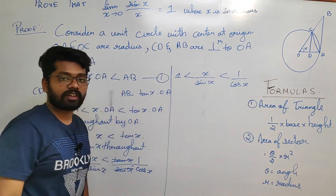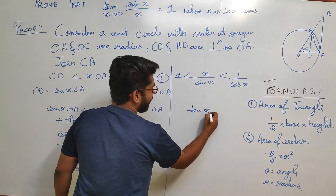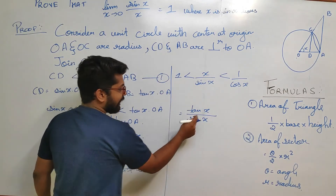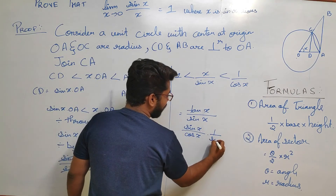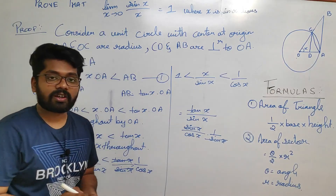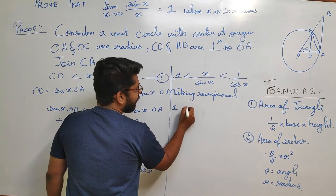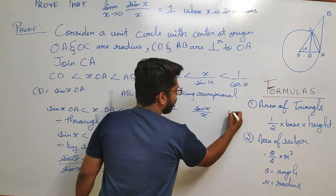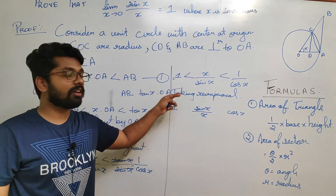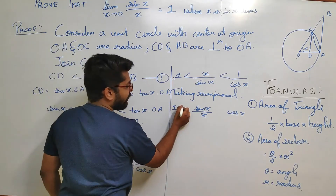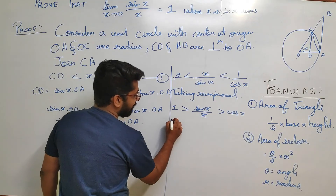Note that tan x / sin x = (sin x / cos x) × (1/sin x) = 1/cos x. So we have: 1 < x/sin x < 1/cos x. Taking the reciprocal of this inequality, the signs interchange, giving: 1 > sin x/x > cos x.